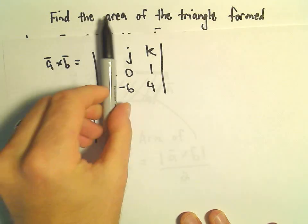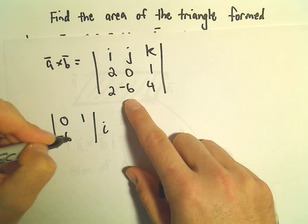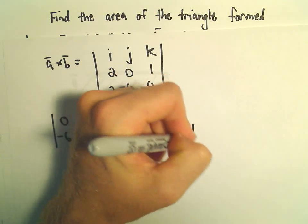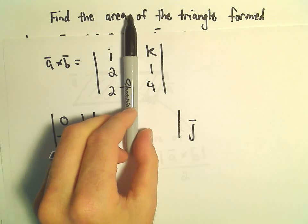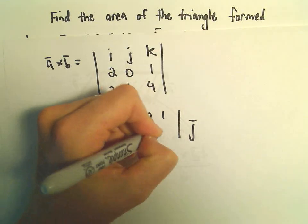Alright, so if you imagine covering up the I column, we'll be left with 0, 1, negative 6, and 4. We'll subtract away the J component. So J, if we cover up that column, we're left with 2, 1, 2, 4. So 2, 1, 2, 4.